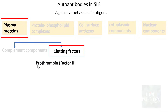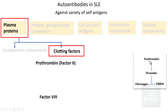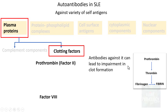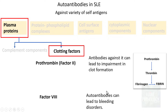The second component of plasma proteins is clotting factors, including prothrombin (factor II) and factor VIII. Prothrombin helps in the conversion of prothrombin to thrombin, which converts fibrinogen into fibrin — a critical mechanism for clot formation. Autoantibodies against prothrombin can impair clot formation, and antibodies against factor VIII can lead to bleeding disorders.